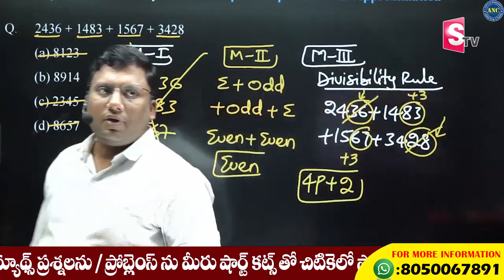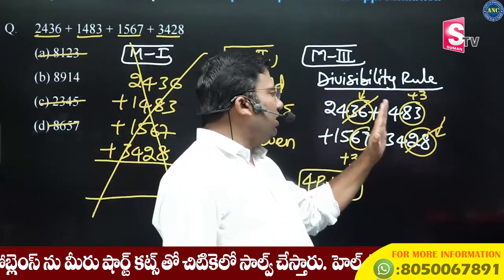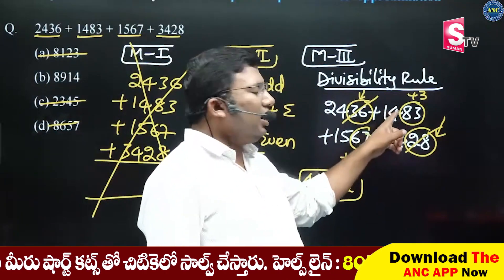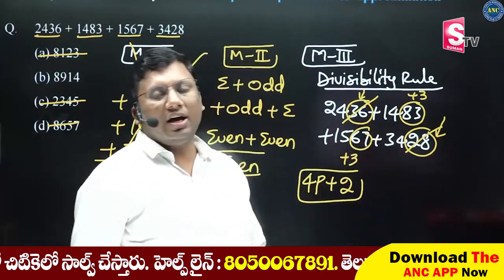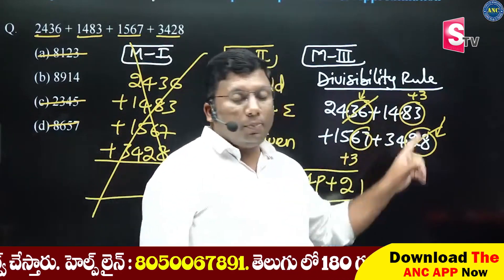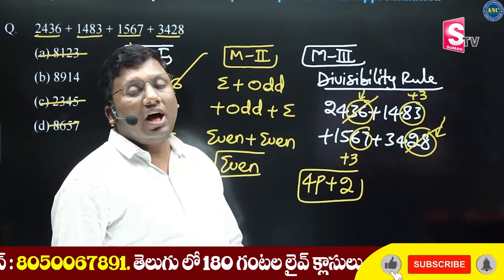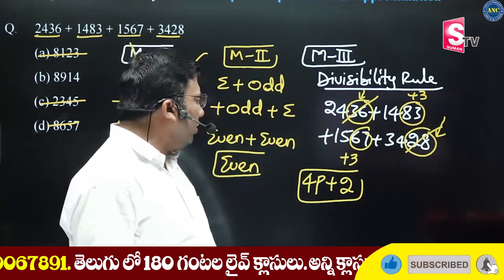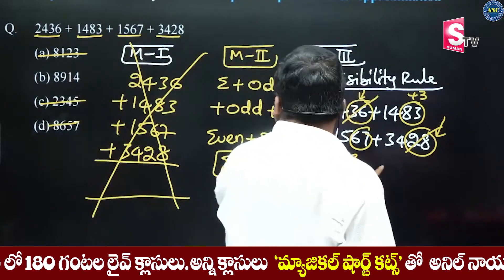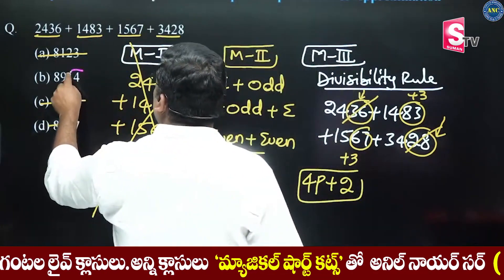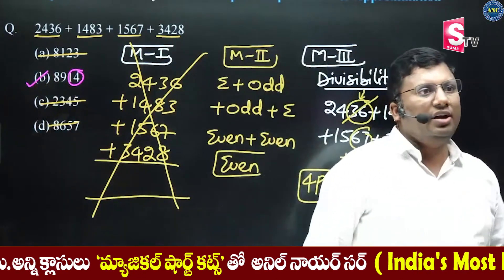This is divisible by 4. 4 into 20 — remainder 3. 4 into 16 — remainder 3. 3 plus 3 equals 6, divisible by 4. Remainder 3. Remainder 3. The answer options are 8, 9, 1, 4.